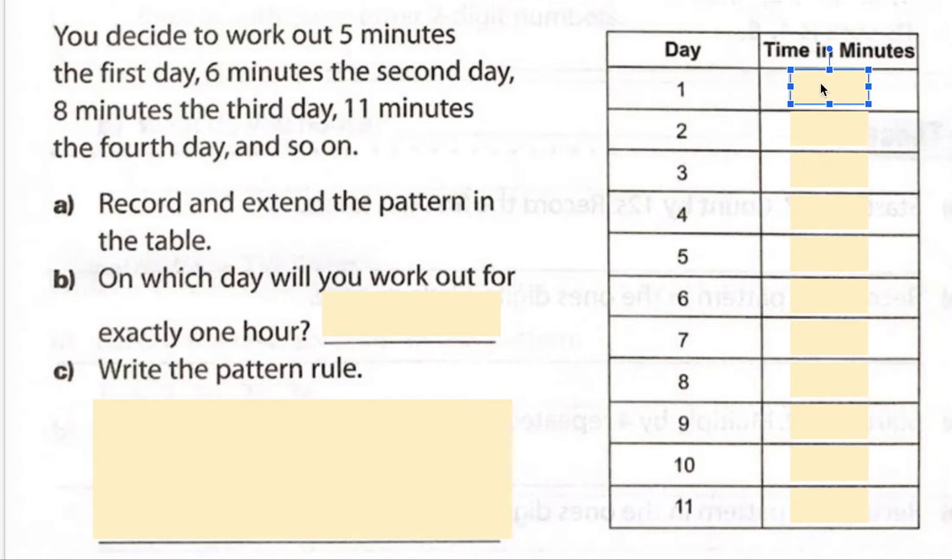So we're going to fill in the chart by clicking in the text box. It tells us right here the first few numbers: five minutes the first day, six minutes the second day, eight minutes the third day, eleven minutes the fourth day and so on. So there's the numbers we already know. We're almost halfway done the chart. Now looking at this pattern I need to figure out what the pattern is because it says five then six then eight then eleven and so on. So we have to figure out what's happening.